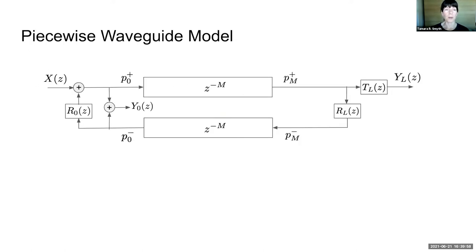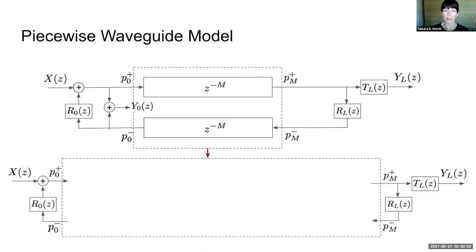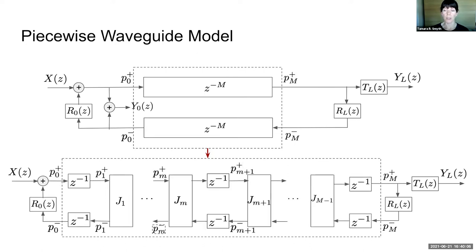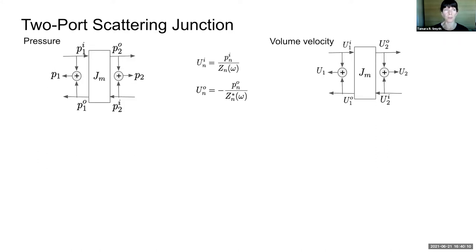There are two-port scattering junctions in between. The piecewise wave-guide model amounts to replacing the pure delay of the wave-guide section with a sequence of two-port scattering junctions interleaved by a unit sample delay, though fractional delay is also possible. The two-port scattering junction takes an input wave component on each of its ports and computes a corresponding output wave component, shown here for volume, velocity, and pressure.